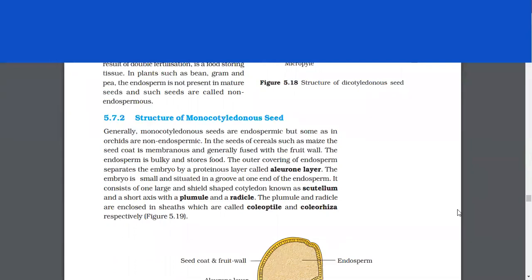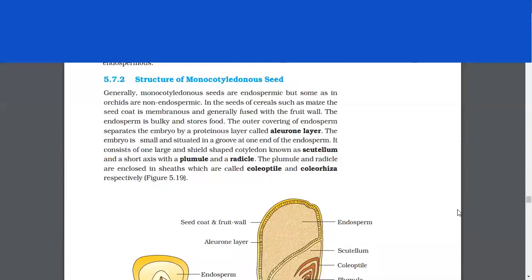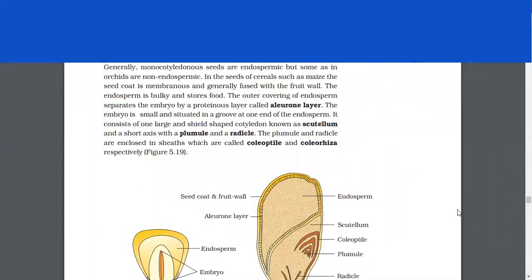Structure of monocotyledonous seed. Generally monocotyledons are endospermic but some as in orchids are non-endospermic. In the seeds of cereals such as maize, the seed coat is membranous and generally fused with a fruit wall. The endosperm is bulky and stores food. The outer covering of endosperm separates the embryo by a proteinaceous layer called aleurone layer. The embryo is small and situated in a groove at one end of the endosperm. It consists of one large and shield-shaped cotyledon known as scutellum and a short axis with a plumule and a radicle. The plumule and radicle are enclosed in sheaths which are called as coleoptile and coleorhiza respectively.